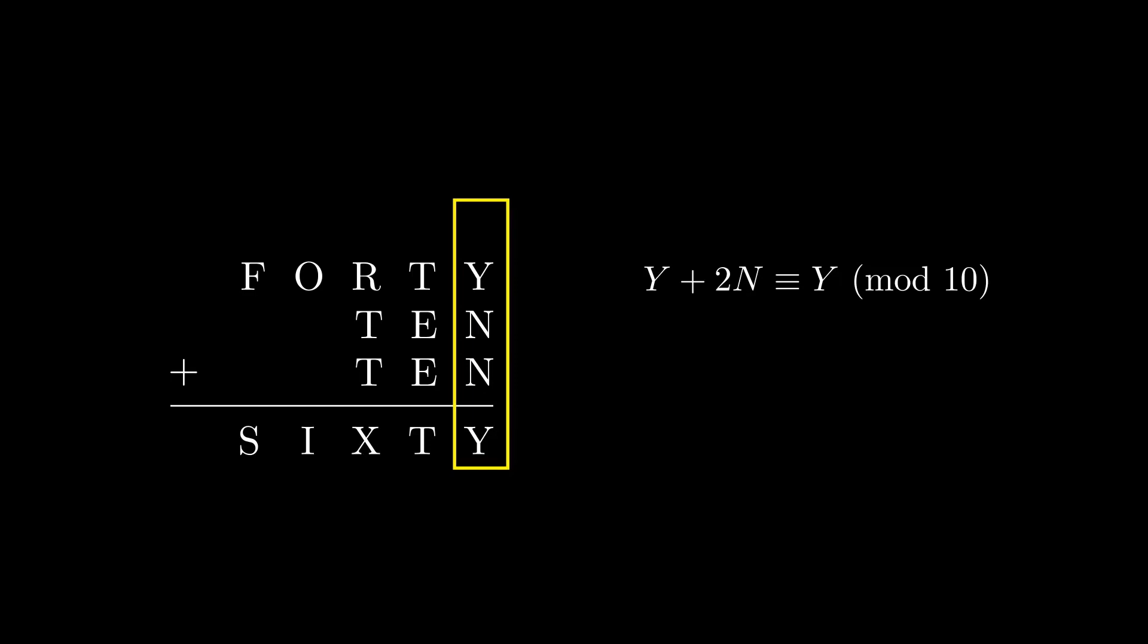If we consider possible values for N, the only ones that work are 5 and 0. 0 clearly works because Y plus 0 is always equal to Y. The reason 5 also works is because 5 plus 5 is equal to 10, and adding 10 won't change the one place digit.